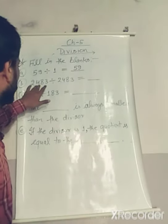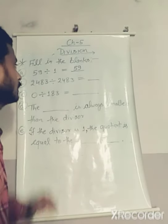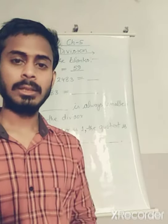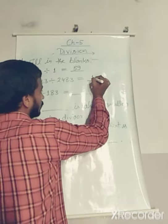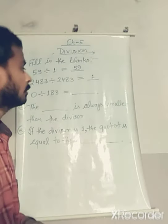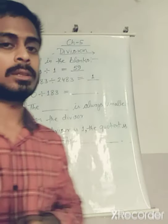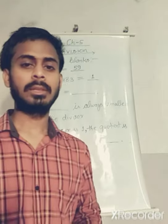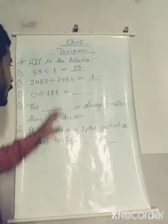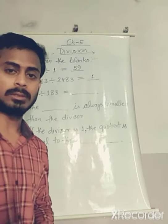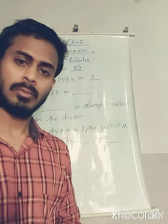Next: 2483 divided by 2483. If we divide a number by itself, we get 1. This is also a property of division — any number divided by itself equals 1 as quotient. For example, 3000 divided by 3000 is 1; 4 lakh divided by 4 lakh is 1.